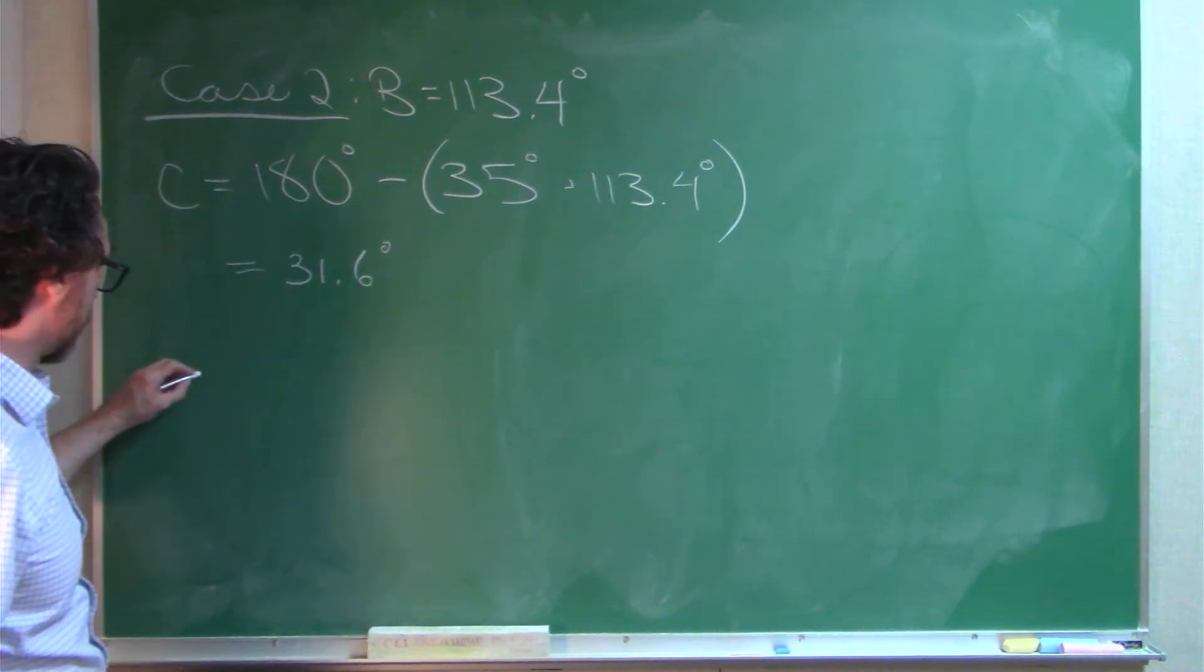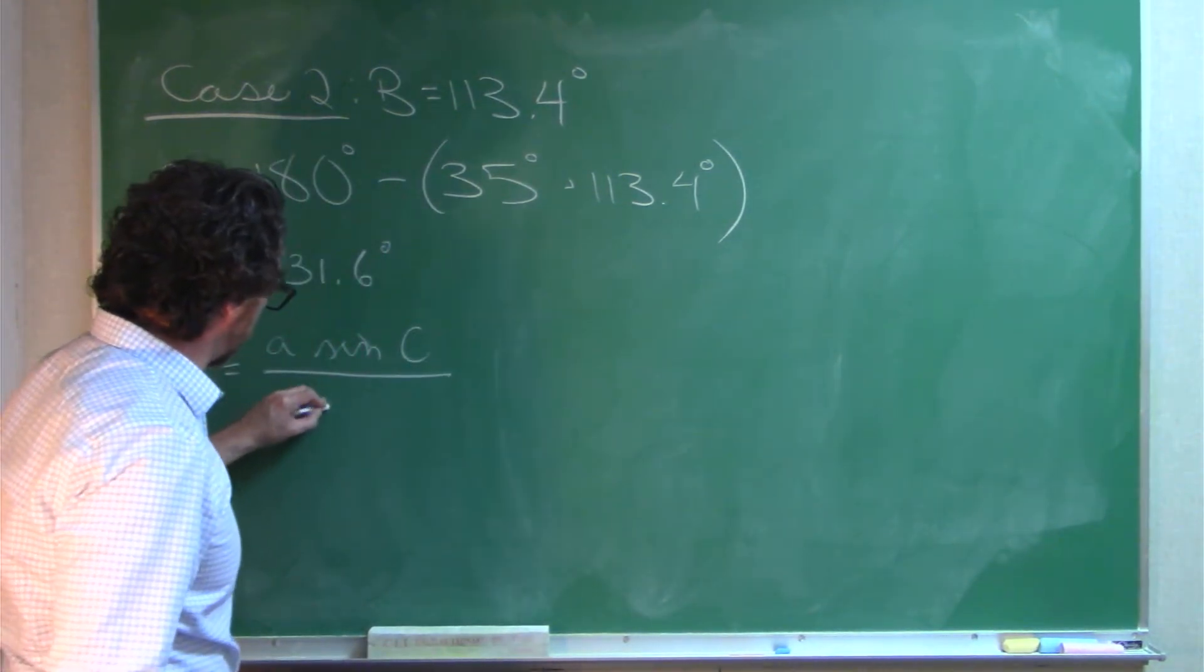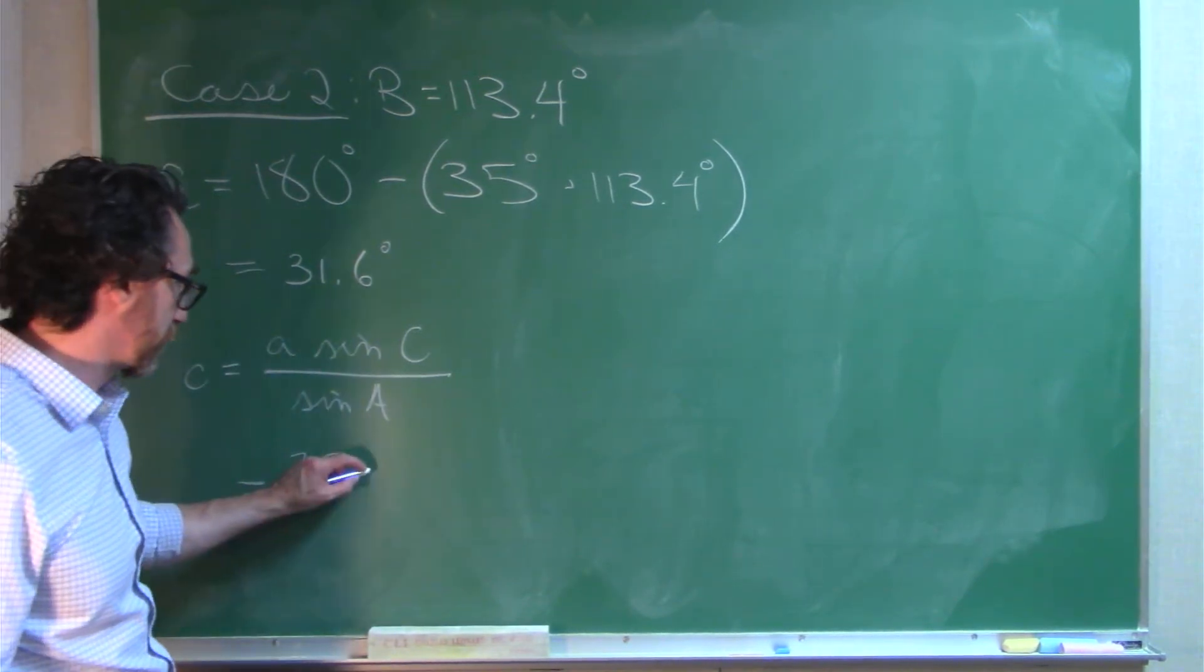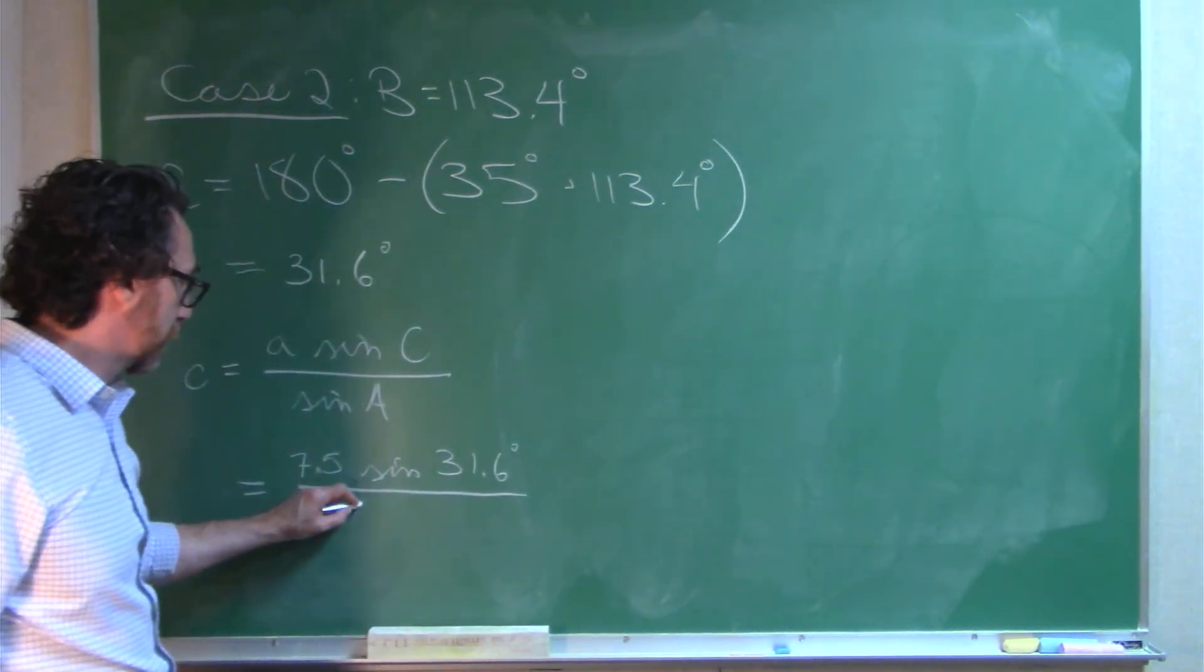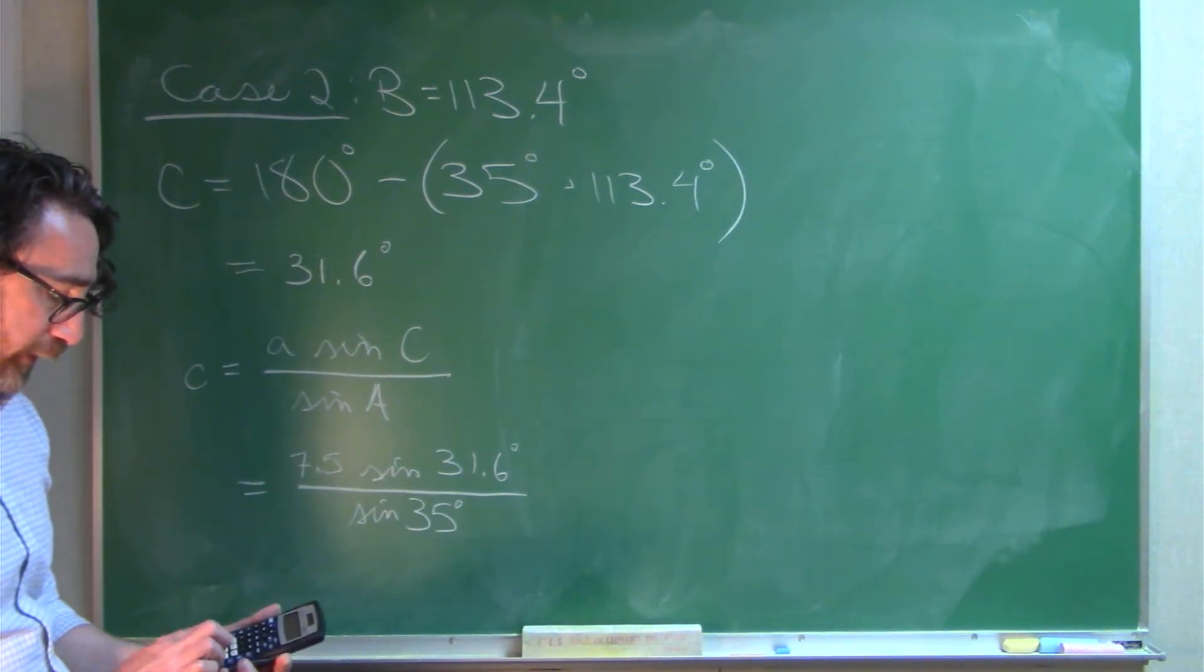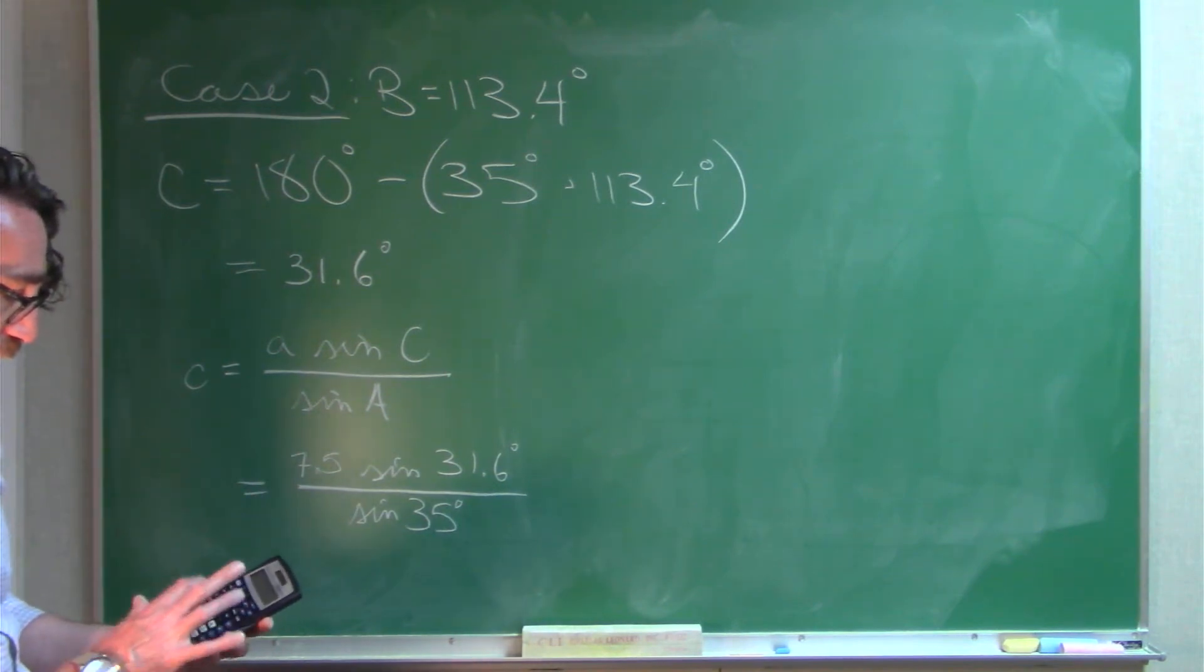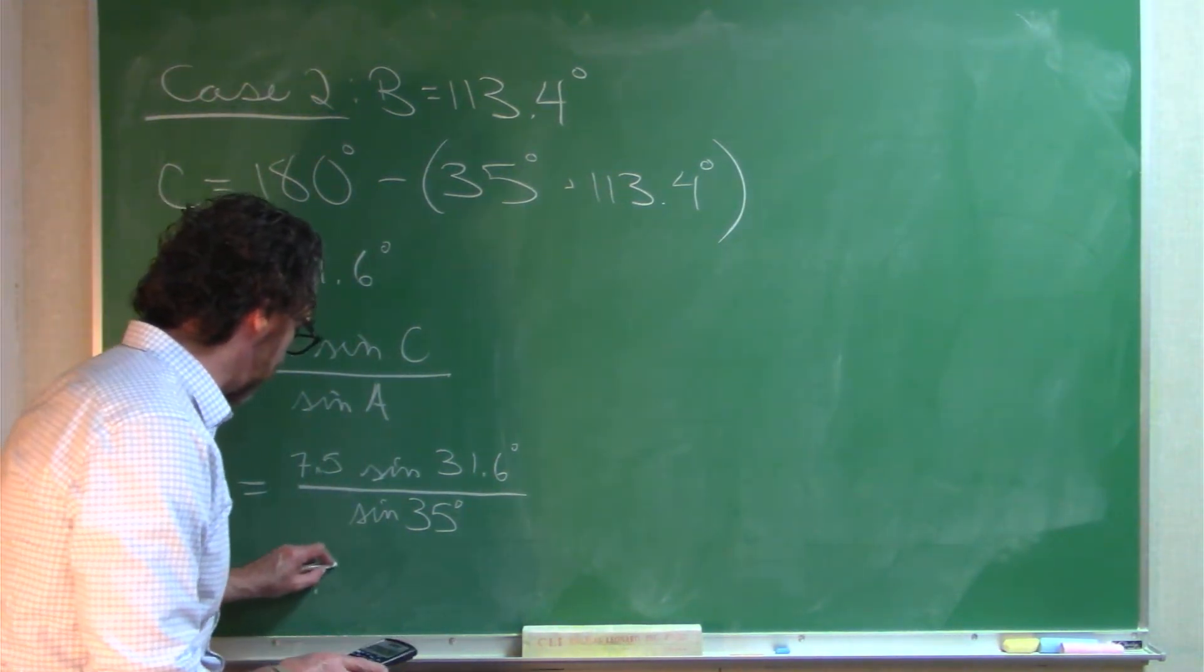And now we will once again use the law of sines to find the length of side C. Fill in all known quantities. A with 7.5 given to us in the statement of the problem. Measure of angle C, 31.6, we just found it. Measure of angle A, 35 degrees from the statement of the problem. So once again, number crunching, 7.5 times sine 31.6, close that parentheses, equals, divide that by sine 35, equals, so I'm getting approximately 6.9.